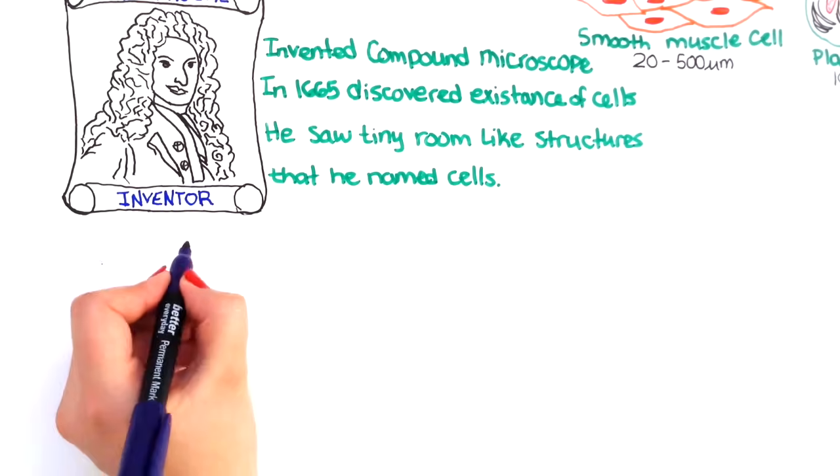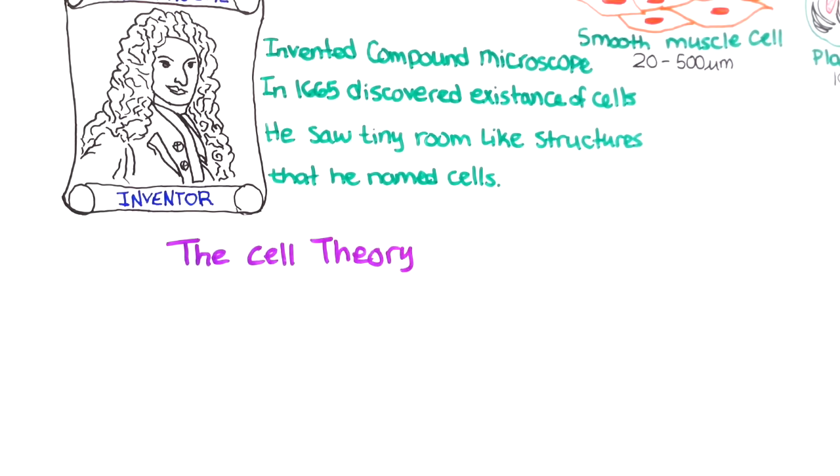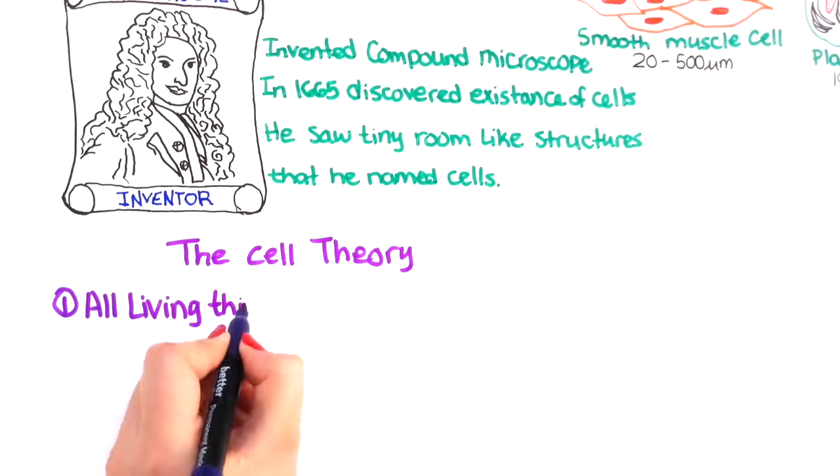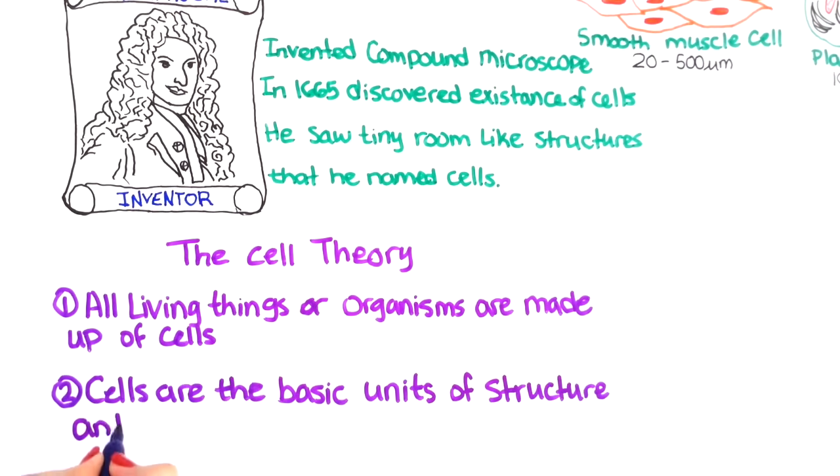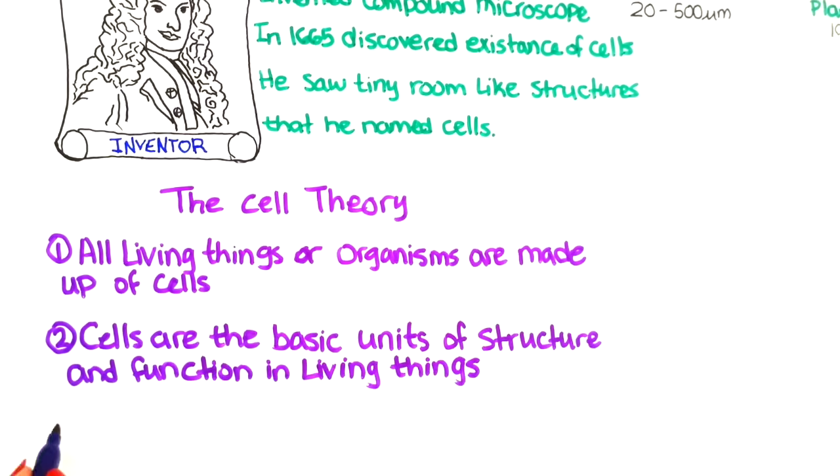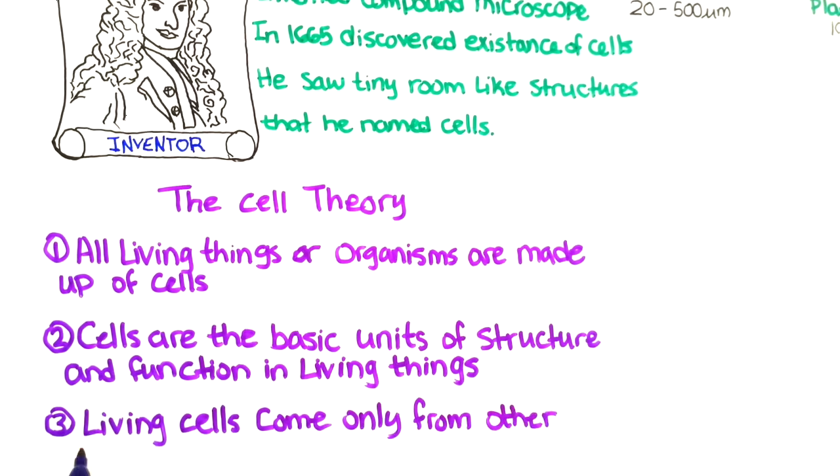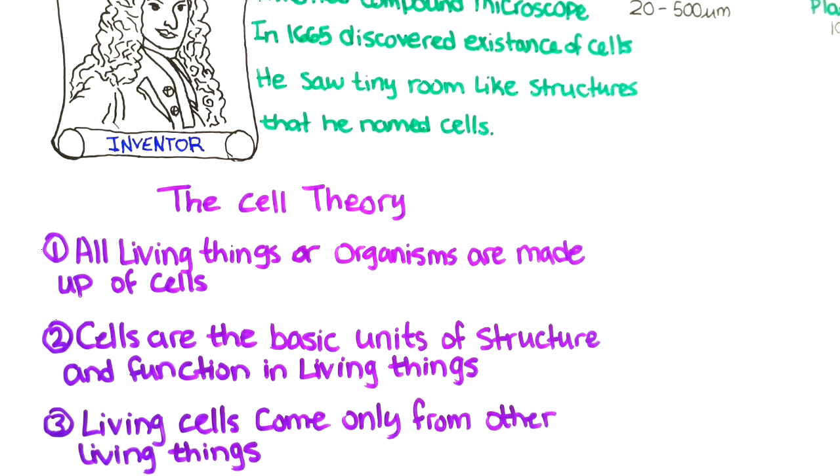Today, scientists have developed what we call the cell theory. This theory states the following: All living things are made up of cells. Cells are the basic units of structure and function in living things. And living cells come only from other living cells.